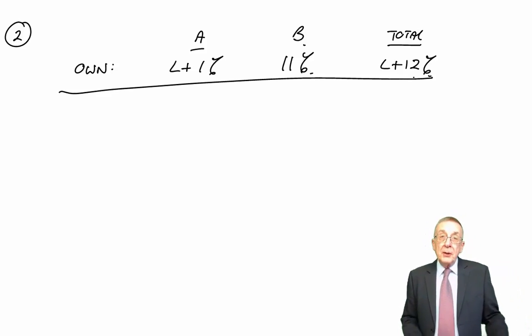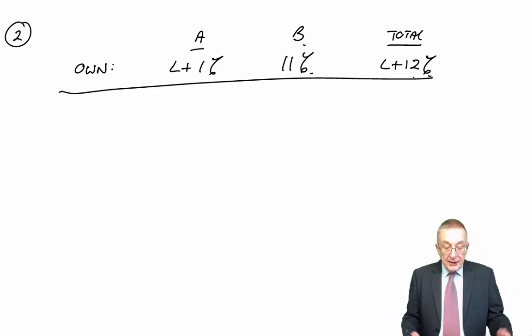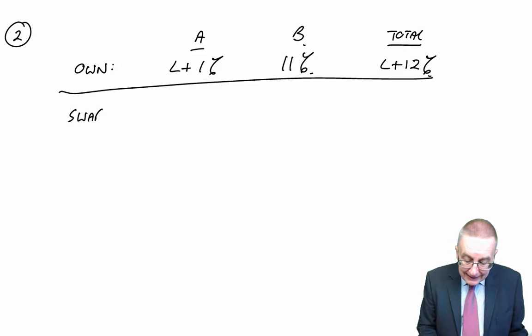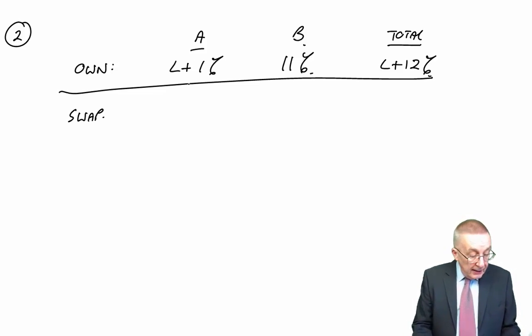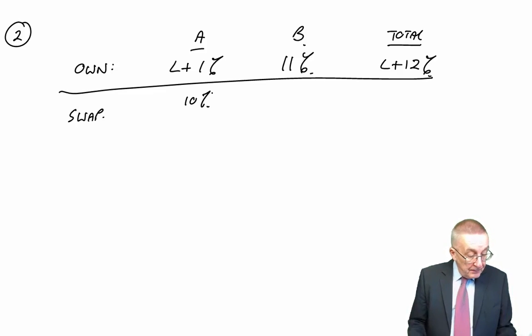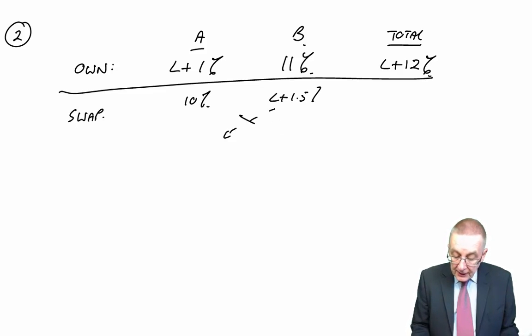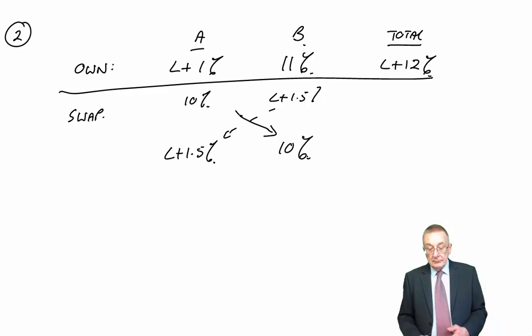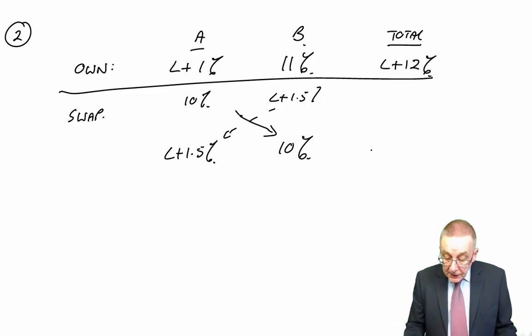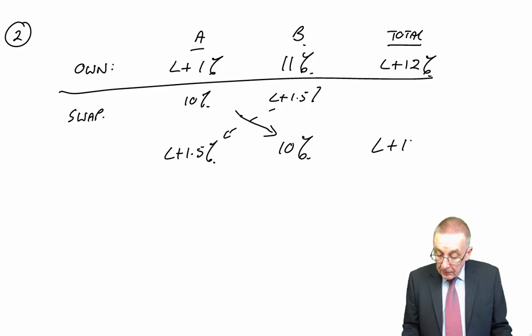Let's look at swap borrowing. If they borrowed the opposite and paid each other's interest, then what would happen? If A borrowed fixed, it would be 10%. If B borrowed floating, it would be LIBOR plus 1.5%. And if they paid each other's interest, A would end up paying LIBOR plus 1.5%. And B would end up paying 10%. And so in total, between them, they'd be paying LIBOR plus 11.5%.